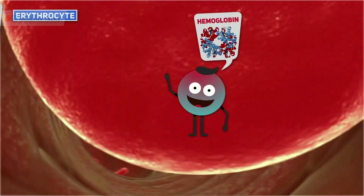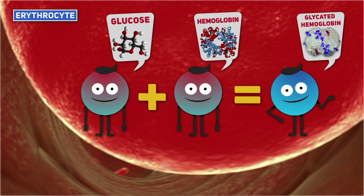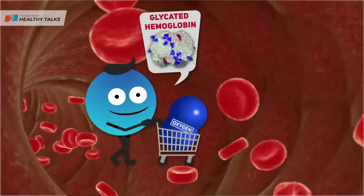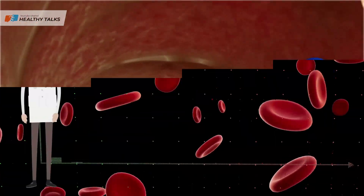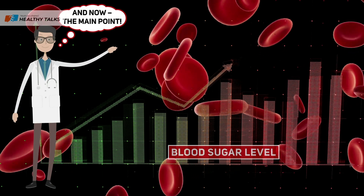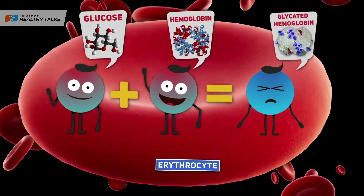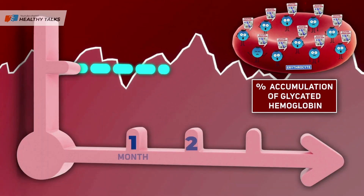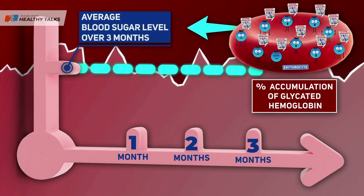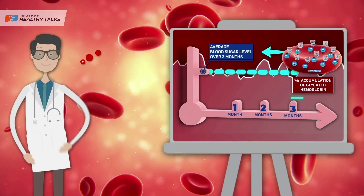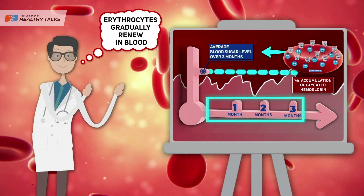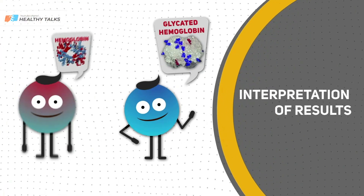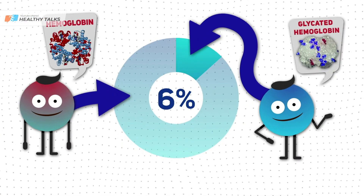When glucose penetrates the red blood cell and combines with hemoglobin, glycated hemoglobin is formed. It can be called broken, spoiled, or candied hemoglobin, since it ceases to carry oxygen and becomes useless to the body. The higher the sugar level and the longer it stays elevated, the faster glucose spoils hemoglobin and the more spoiled hemoglobin accumulates in red blood cells. The percentage of cumulative glycated hemoglobin reflects the average glucose level over the past three months with high accuracy. This time frame was determined by scientists taking into account that red blood cells are gradually renewed. One red blood cell contains 270 million hemoglobin molecules, and glycohemoglobin levels are determined as a percentage of total hemoglobin in the blood.